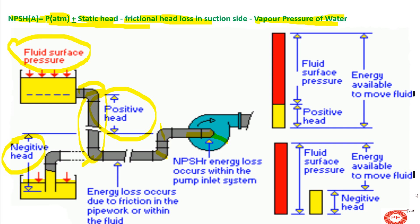Vapor pressure depends upon the properties of the liquid. If pumping a liquid at 20°C, vapor pressure will be less; if pumping a liquid at 500°C, vapor pressure will be more. As temperature increases, vapor pressure also increases, and as this value becomes larger, the NPSH available calculation becomes smaller. So while calculating NPSHA, make sure you know the vapor pressure and the temperature of the liquid being pumped.